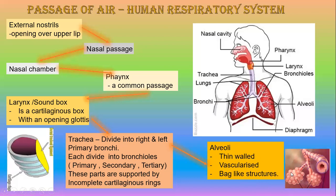The bronchi also lead into certain bag-like structures — air sacs. These are covered with blood vessels and are vascularized. They are lined with a thin, single-layer cell of squamous epithelium. The air-filled chambers are called alveoli — alveolus is the singular form.